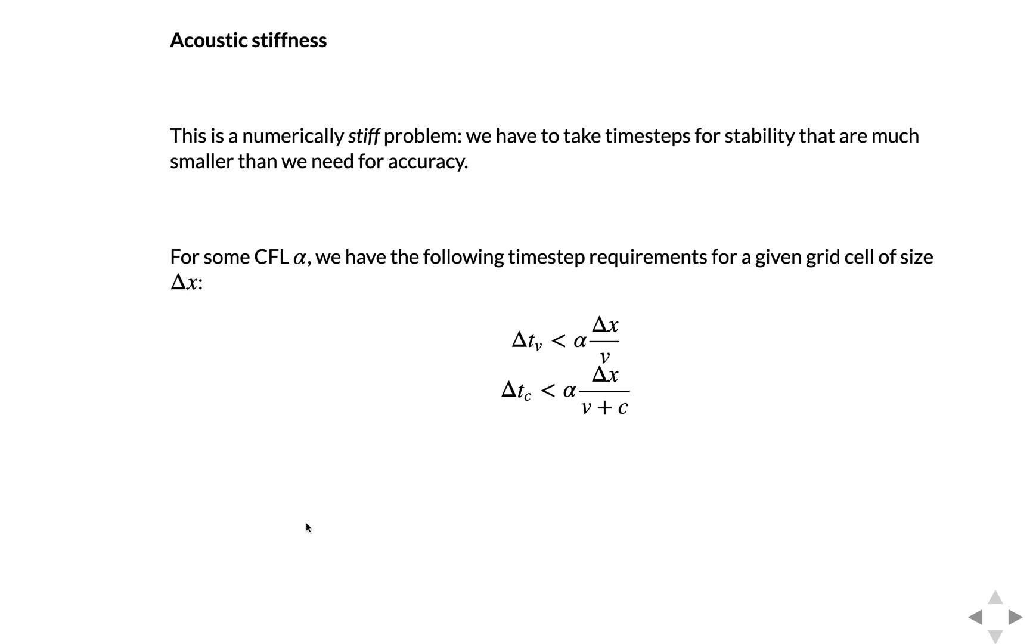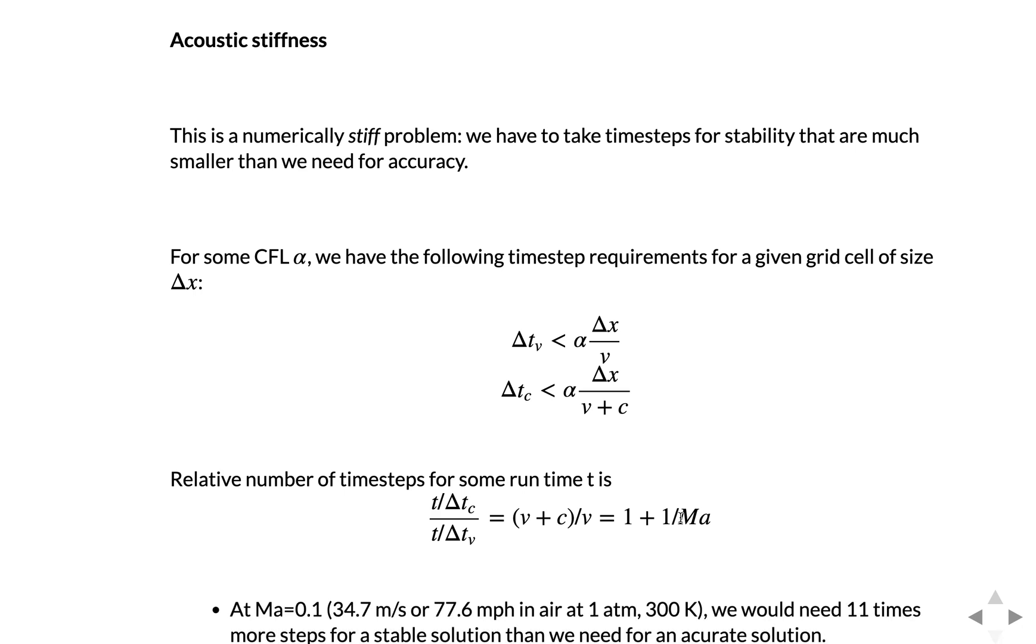So the time step size based on the flow velocity would be alpha delta x over v, and the time step based on the acoustic or C scale, sound speed scale, is less than alpha delta x over v plus C. And so you can look at the relative number of time steps that are required to run for some time t. So the number of steps would be t over the time step. And the number that you need for acoustic stability relative to the number that you need for accuracy of capturing the physics of the flow will just be this ratio here, v plus C divided by velocity, which is one plus one over the Mach number. So the relative number of time steps that you need goes with one over the Mach number. At low Mach numbers you'll have a lot of time steps.